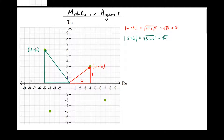So in general, the modulus of any complex number a plus bi is equal to the square root of a squared plus b squared. That's a formula you're allowed to remember. You don't need to derive this every time or draw the diagram on the Argand diagram.